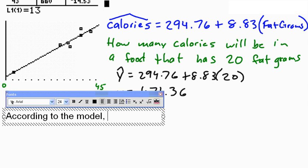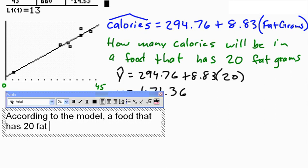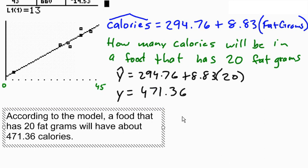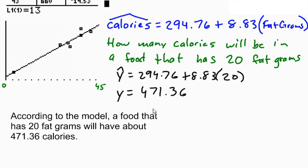A food that has 20 fat grams will have about 471.36 calories. You have to tell, when you write your answers like this, you have to tell where this comes from. So according to the model, or I could even put in there, according to the linear model, a food that has 20 fat grams will have about 471.36 calories.